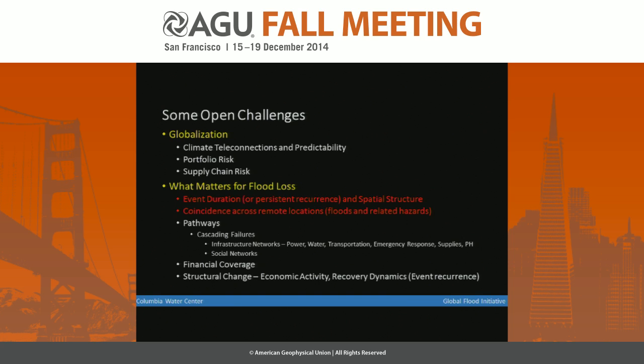In terms of regional supply chains, there are other pathways I'm concerned about: cascading failures. All developed societies — and to an extent developing societies — function because of infrastructure networks. Let's say a flood knocks out my power supply in a particular area; all other critical infrastructures are now out as long as that power is out. So I need to understand from a flood risk and supply chain perspective what are the hit points, what are the weak spots, and how the failure propagates through such systems.